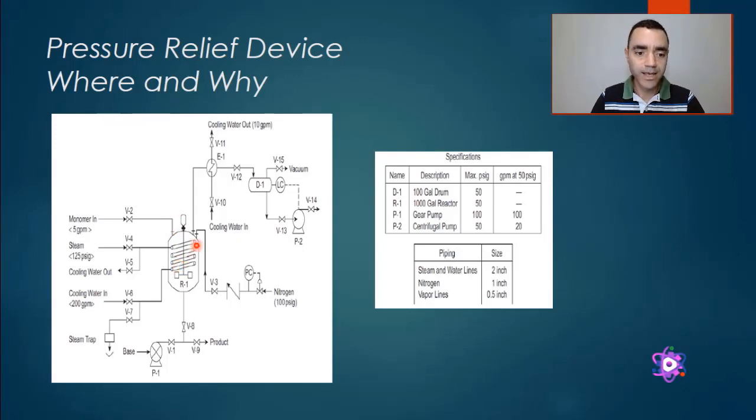Another case that we have here is the vapor phase is condensed in a condenser. This is a hot stream passing through a heat exchanger that is cooled down with cooling water.